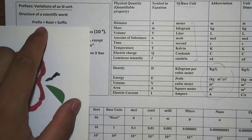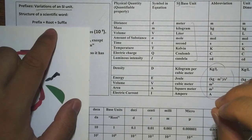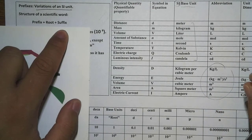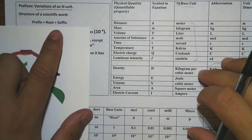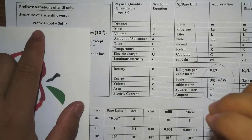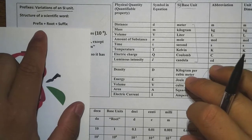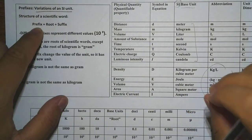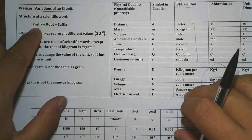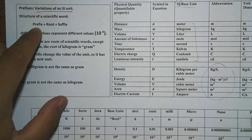The structure of a scientific word is: prefix + root + suffix. We're going to look at more examples of this later, but this is the general structure of a scientific word. For the SI system, we are going to focus on the prefix and how we can change the prefix of an SI unit.